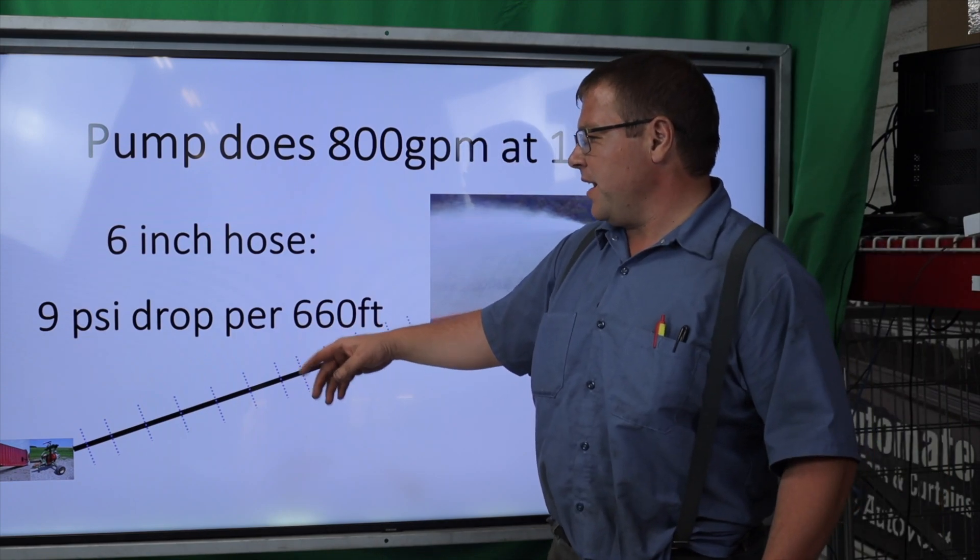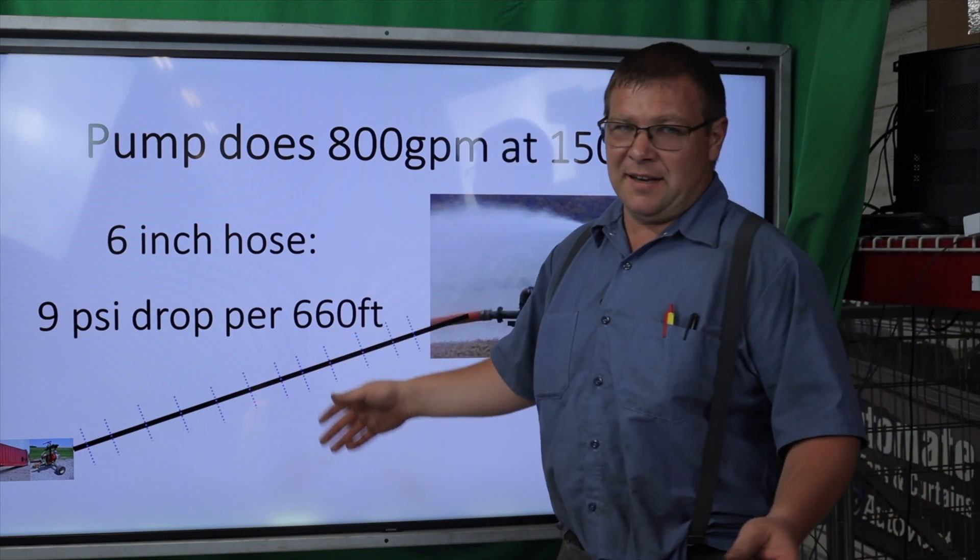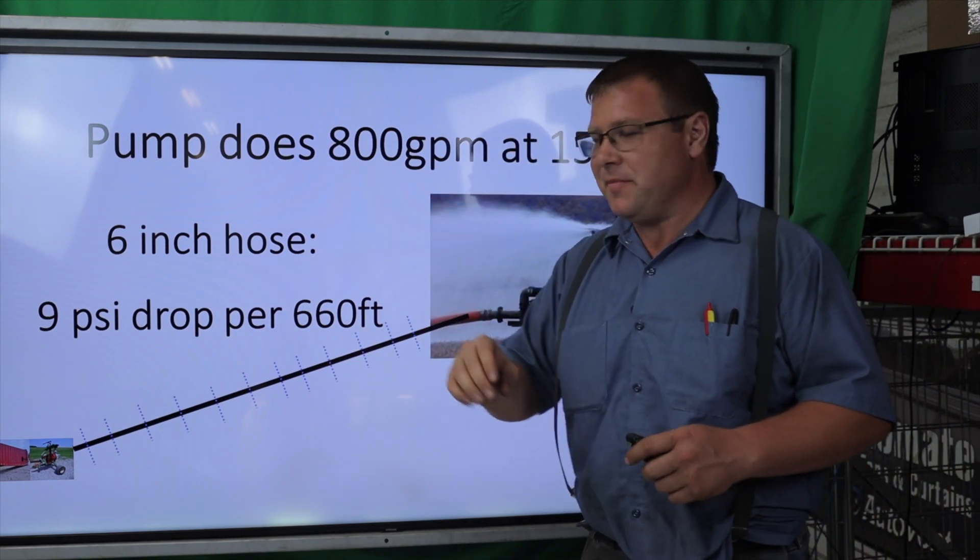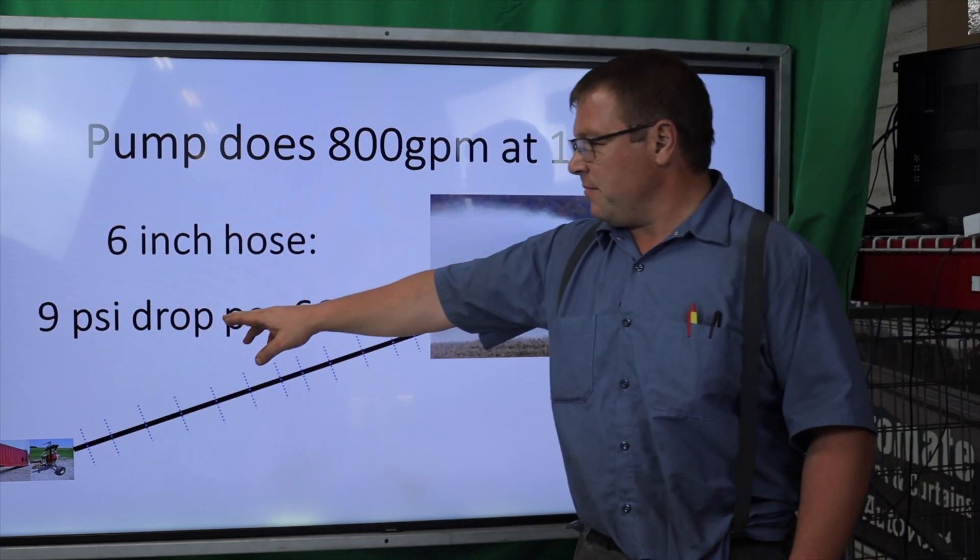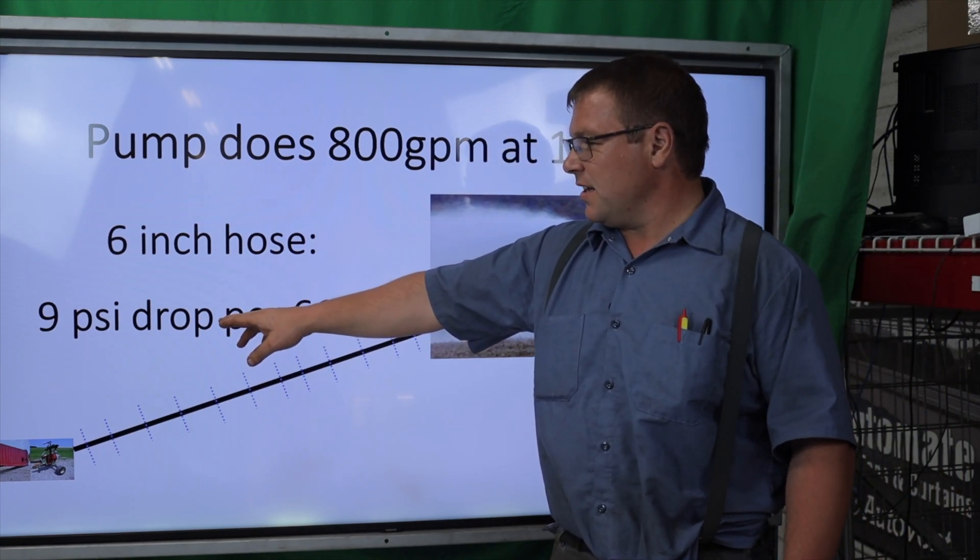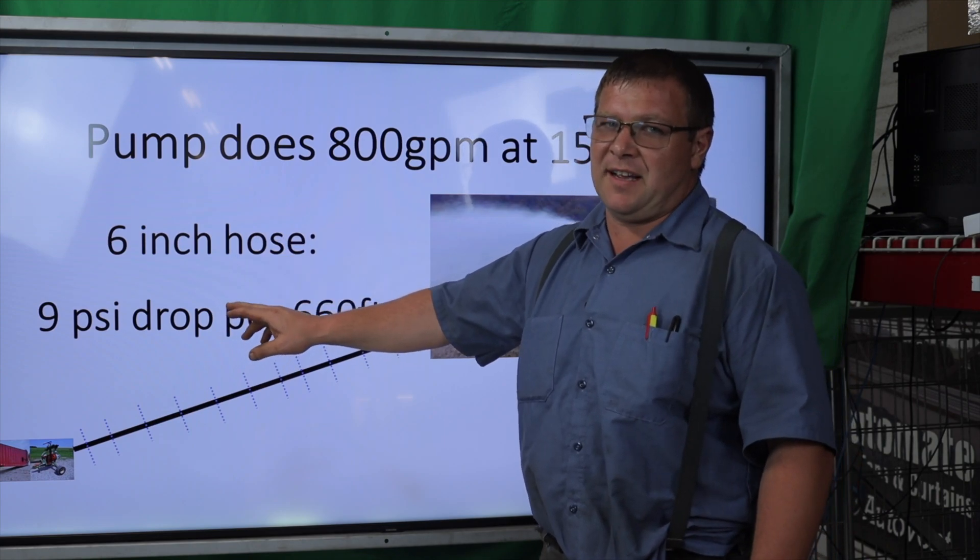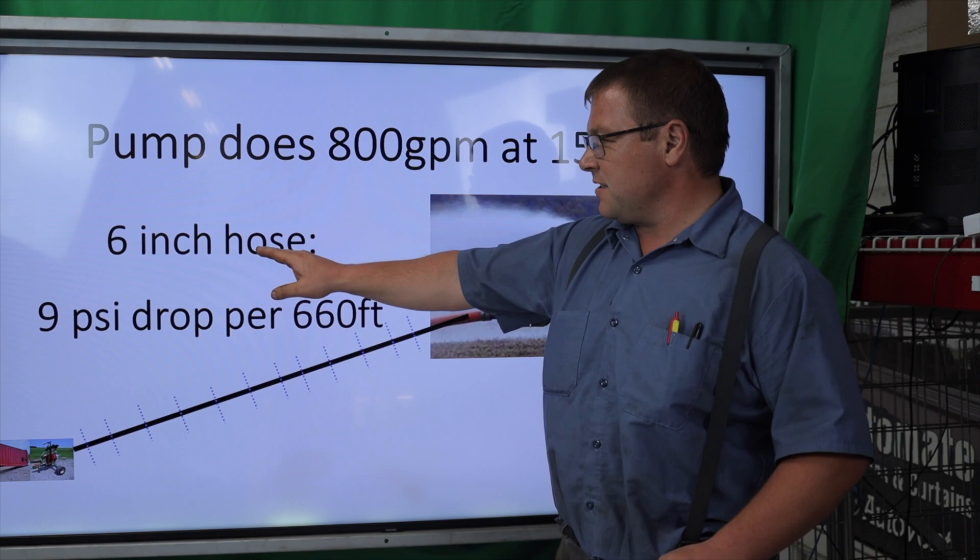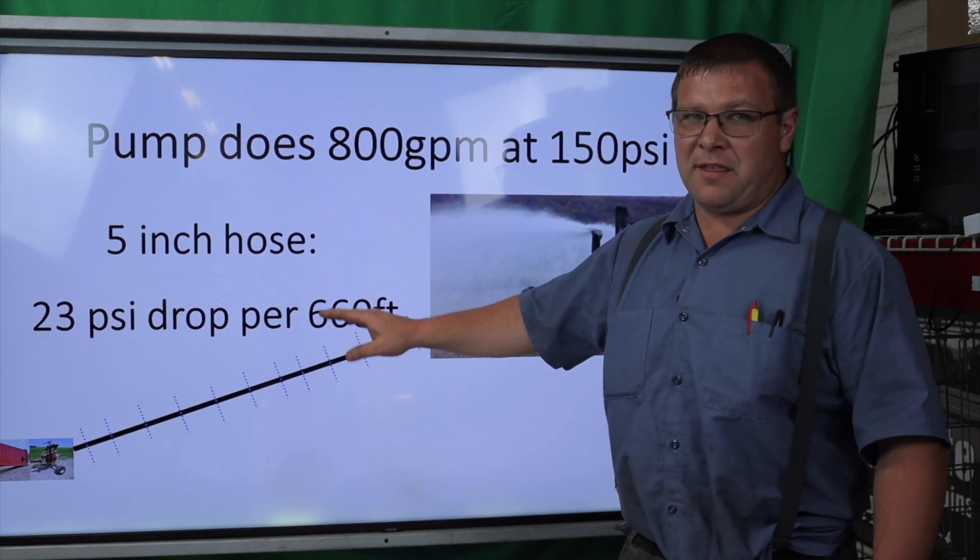Is there a big difference between 23 PSI and 9 PSI? That's the difference one inch makes. You could have two and a half sections of six inch hose go the same distance as one section of five inch. You can only go 660 feet with five inch hose.